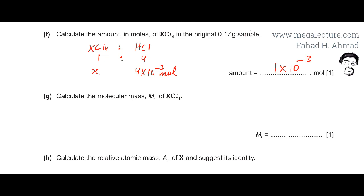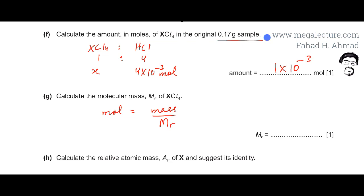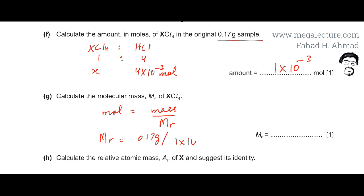Part G asks to calculate the molecular mass (MR) of XCl₄. Using n = mass ÷ MR, we rearrange to MR = mass ÷ moles = 0.17 g ÷ (1 × 10⁻³ mol) = 170.